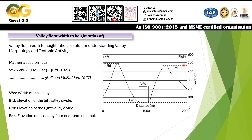To determine which side is left and which is right, you must face downstream. When facing the downstream direction of a river or stream, the valley side on your left is the left side, and the valley side on your right is the right side. The variable Esc is the elevation of the valley floor or stream channel at that point — for example, 50 meters at the measurement location in the diagram.